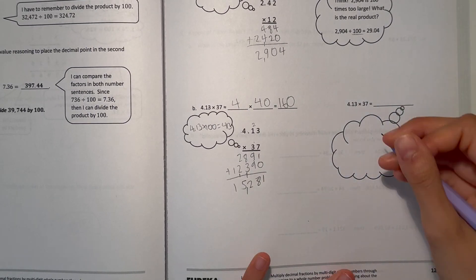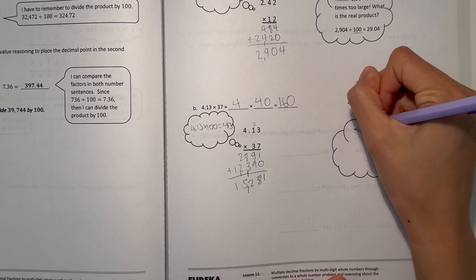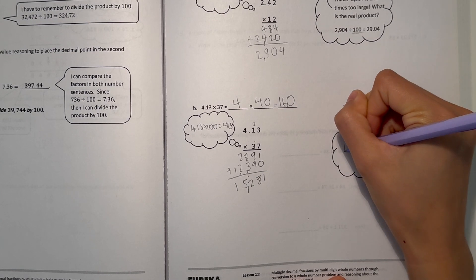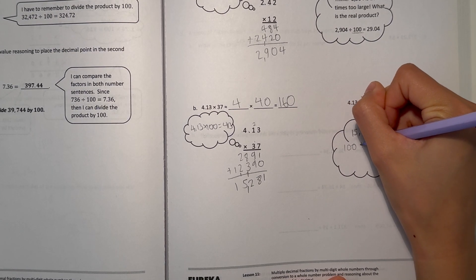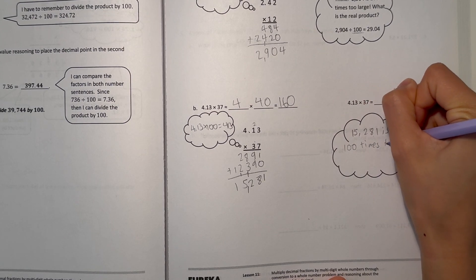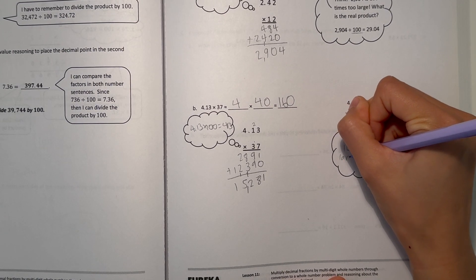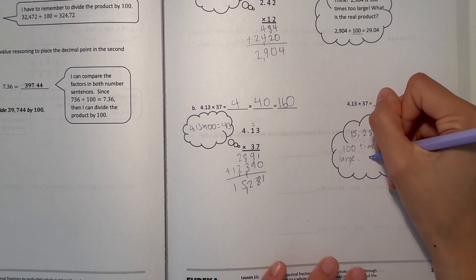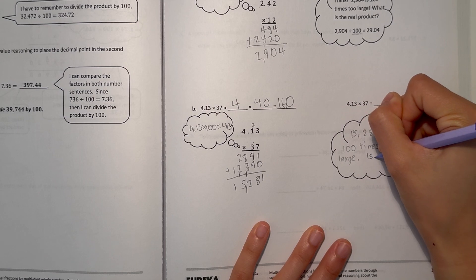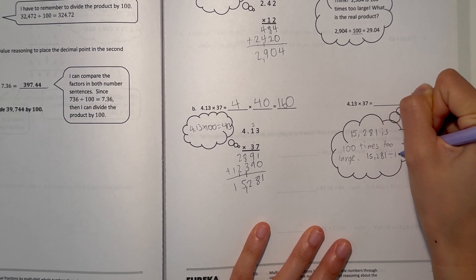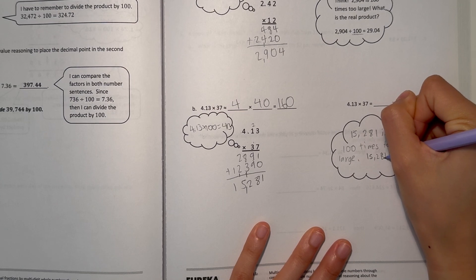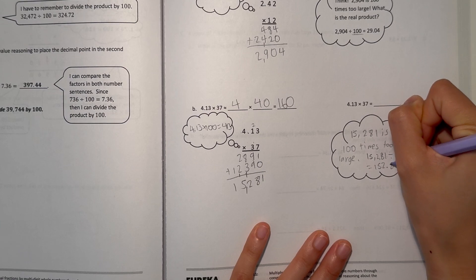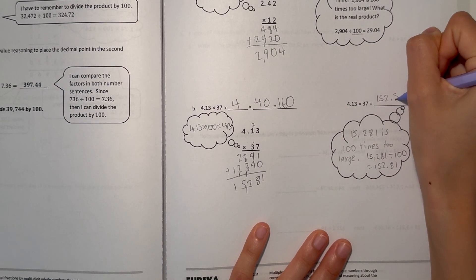Now let's move on over here. Think 15,281 is 100 times too large because we multiplied 4.13 by 100. So now to find our real product, we have to do 15,281 divided by 100, move two places to the left. That would equal 152.81. The answer is 152.81.